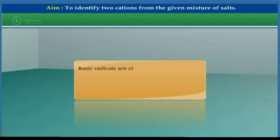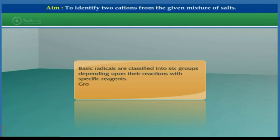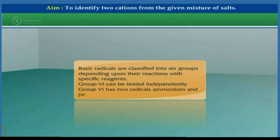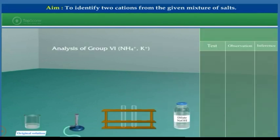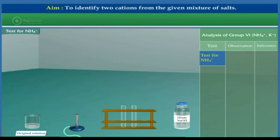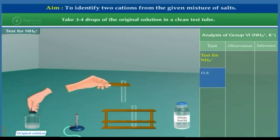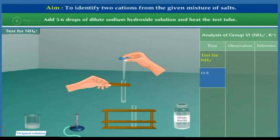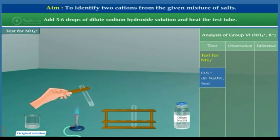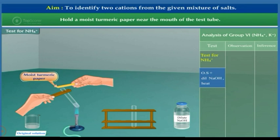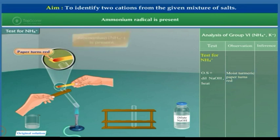Basic radicals are classified into six groups depending upon their reactions with specific reagents. Group 6 can be tested independently. Group 6 has two radicals: ammonium and potassium. Analysis of Group 6 — Test for ammonium: Take three to four drops of the original solution in a clean test tube. Add five to six drops of dilute sodium hydroxide solution and heat the test tube. Hold a moist turmeric paper near the mouth of the test tube. If the paper turns red, ammonium radical is present.